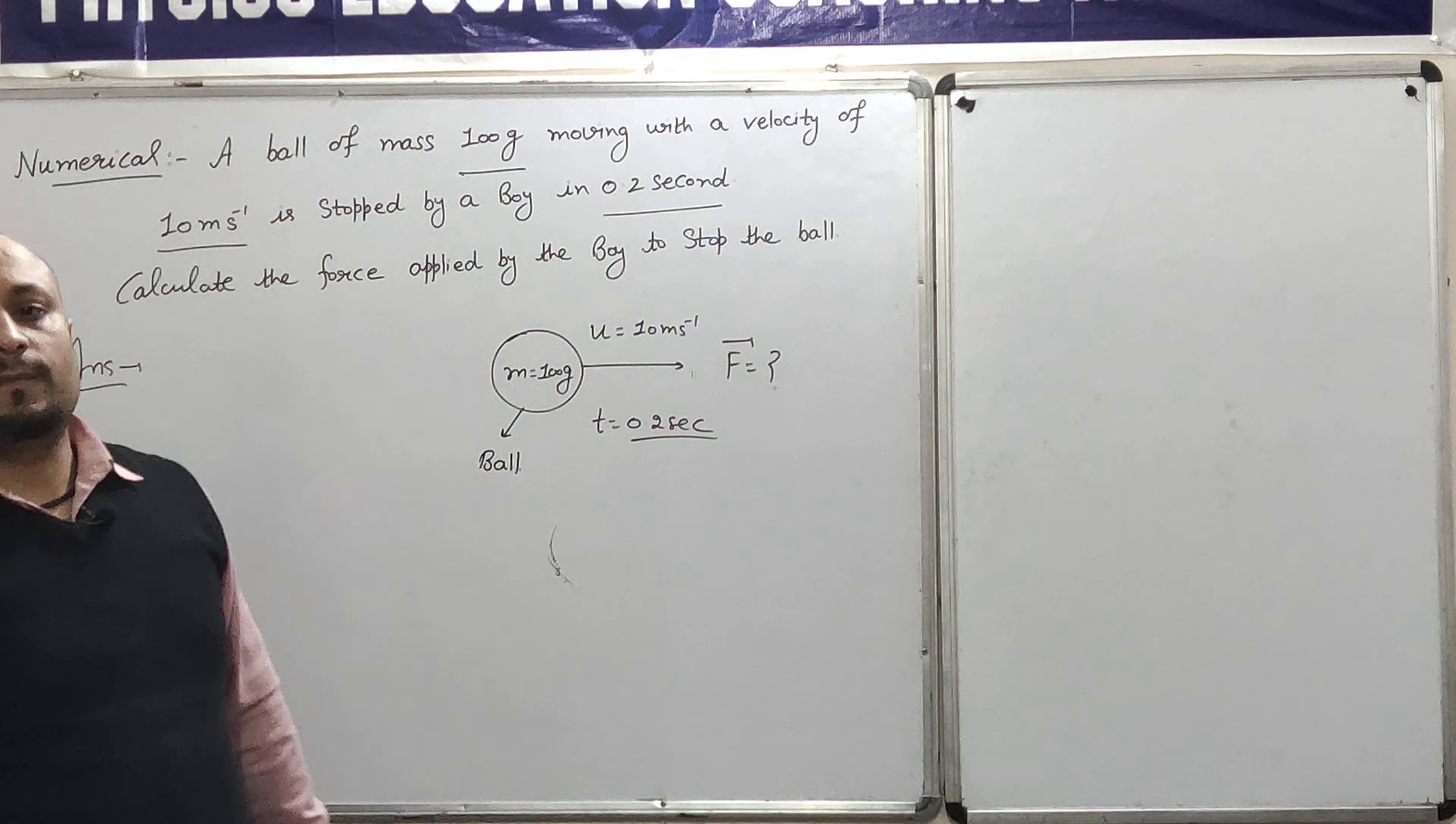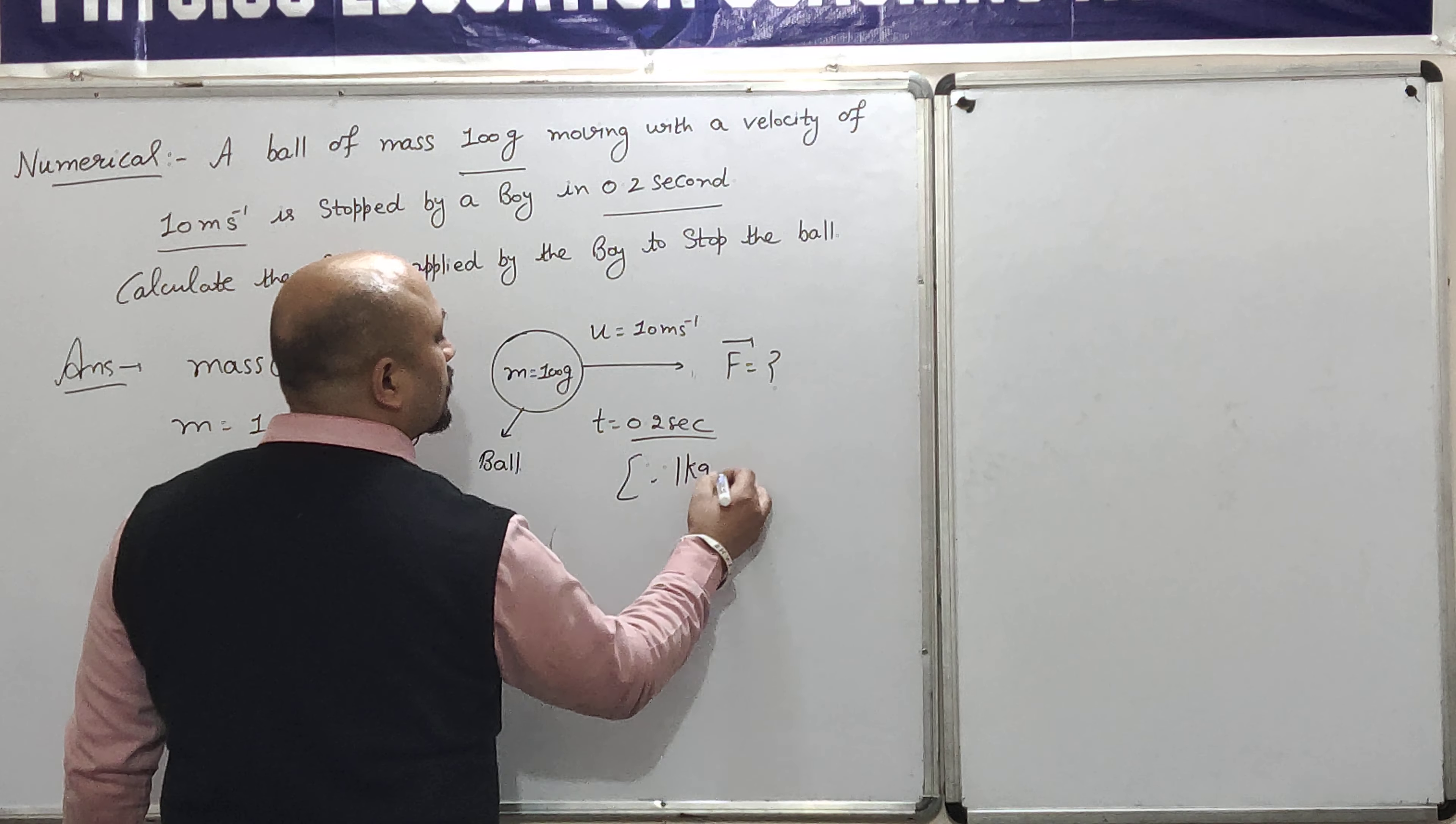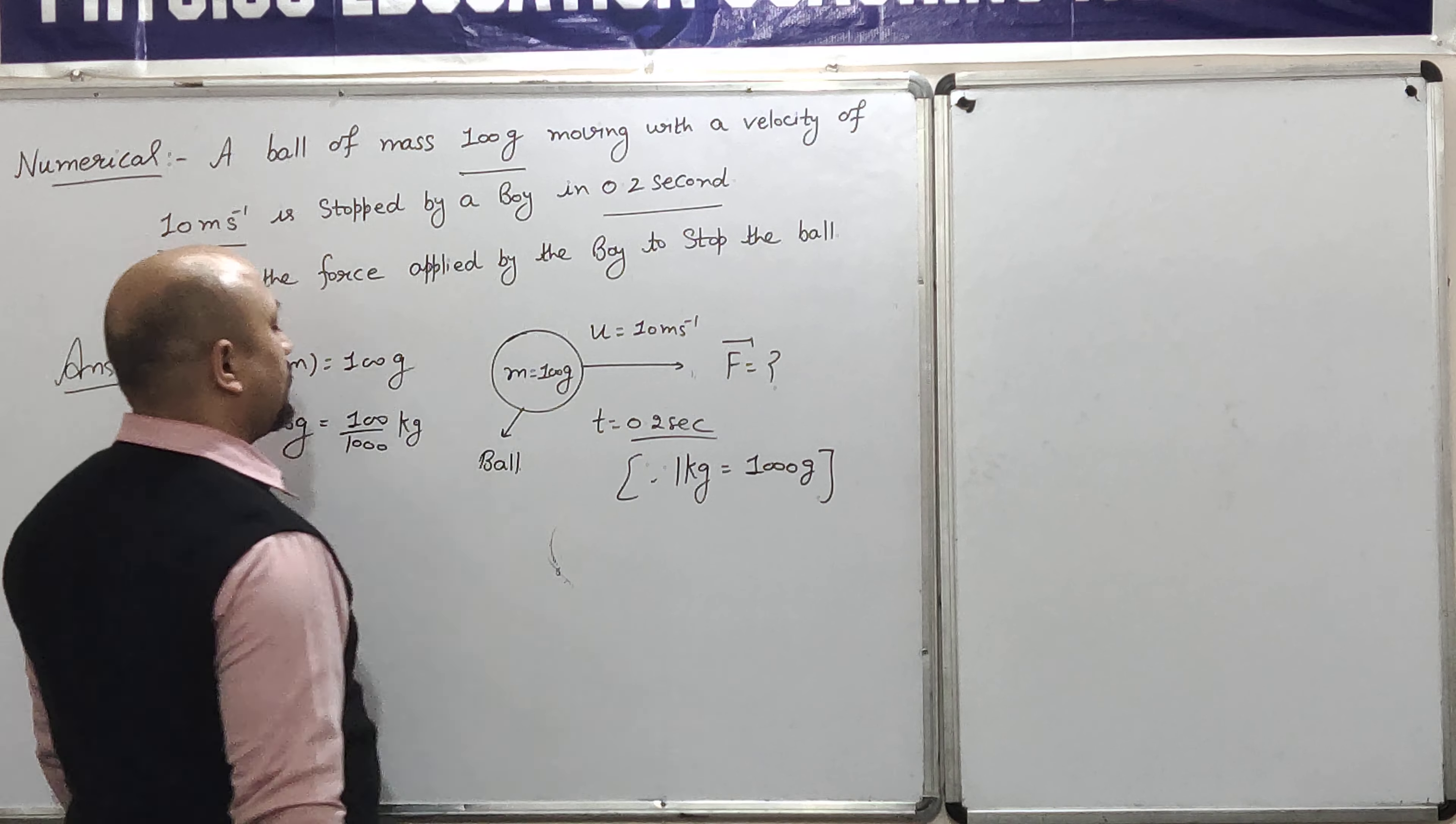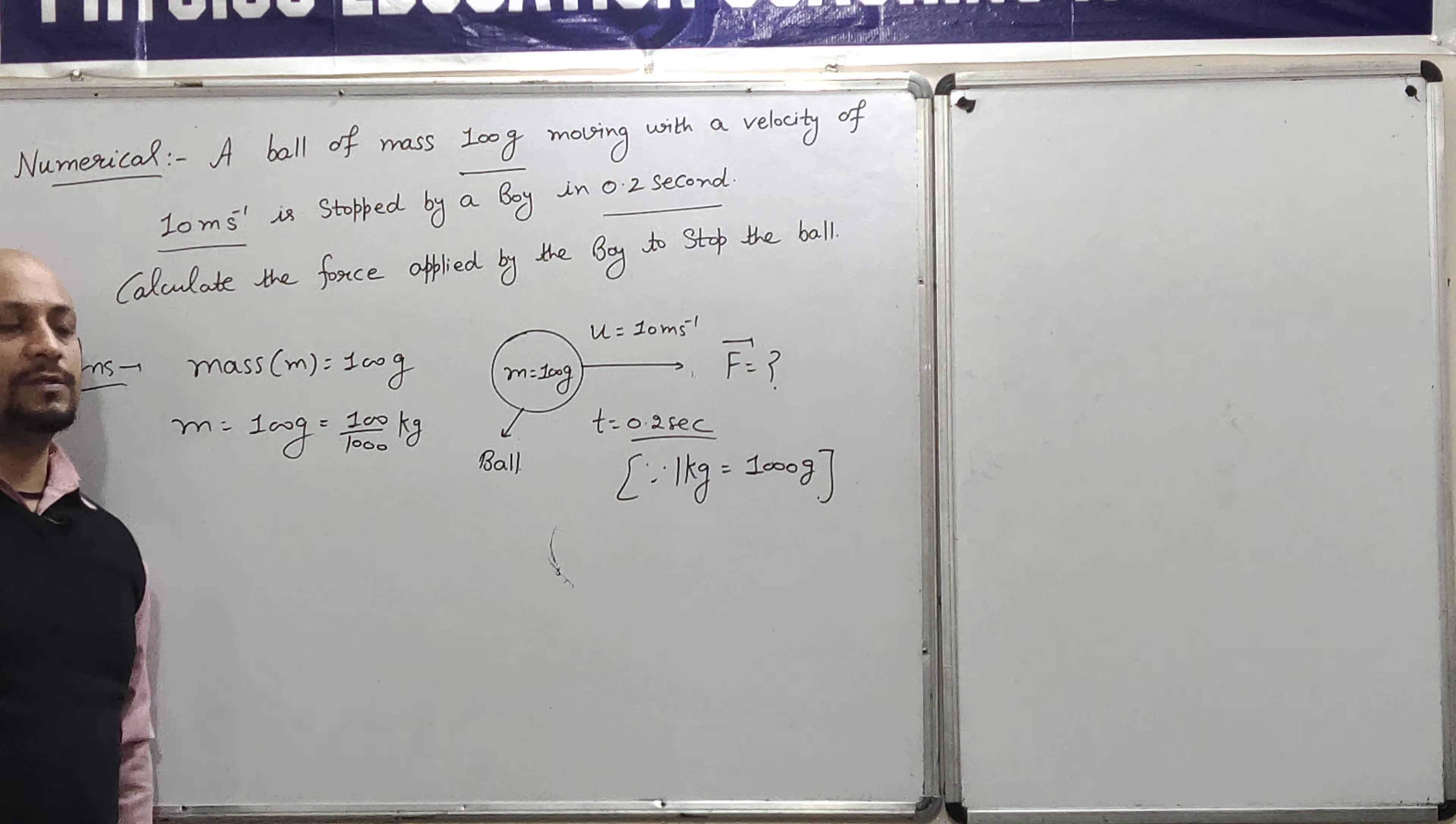Now what is the mass of the ball? How much? It is 100 grams. This means that the value is 100 grams given. But in 1 kg, the 100 by 1,000 kg. This means 100 by 1,000 kg. This means that 100 grams has been given. So 100 grams are 100 by 1,000 kg.